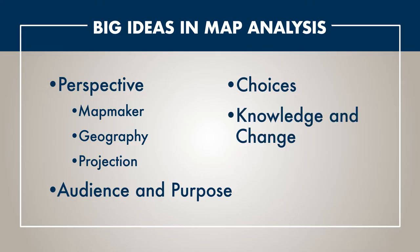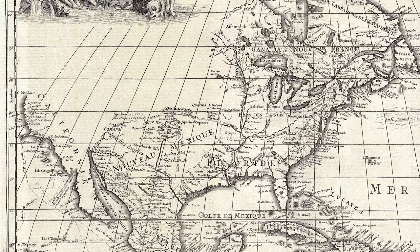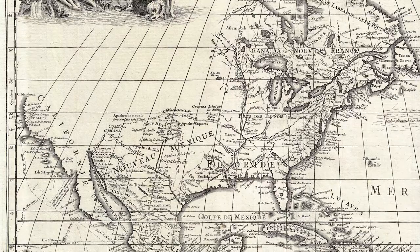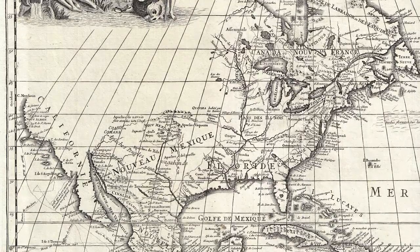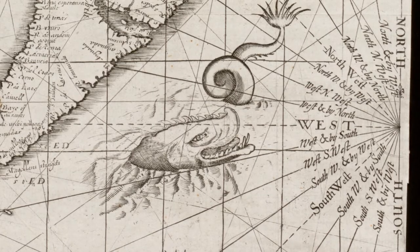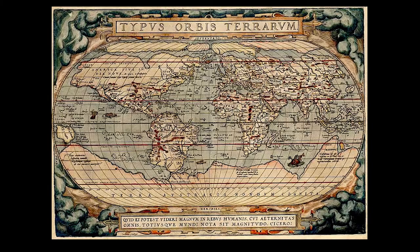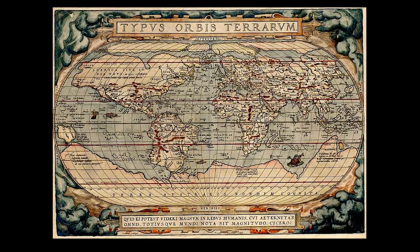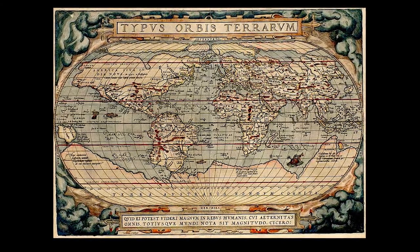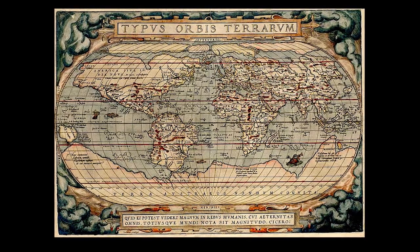Finally, knowledge and change are very important as well, because the map could have been made hundreds and hundreds of years ago. The Americas may not be on it or only partially mapped. The oceans may be filled with sea monsters, or land such as a giant Antarctica that we know today is not how the land mass really looks. But hundreds of years ago, they believed there was a megacontinent at the South Pole.